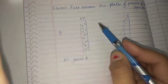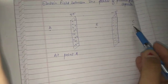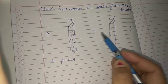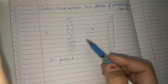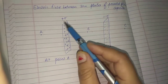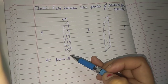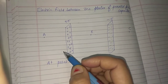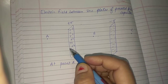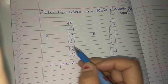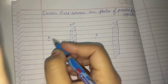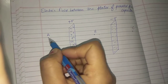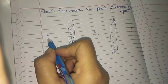The points are very much closer to the plates, and the two plates are also very close to each other, so the plates can be treated as infinitely large sheets. We have already calculated, using Gauss's theorem, that the electric field due to an infinitely large surface charge distribution is Sigma by two epsilon naught.